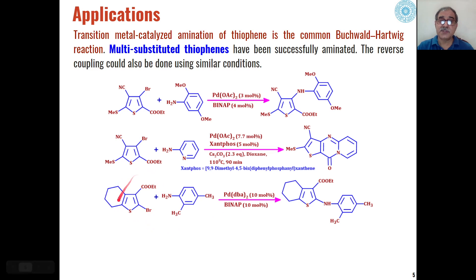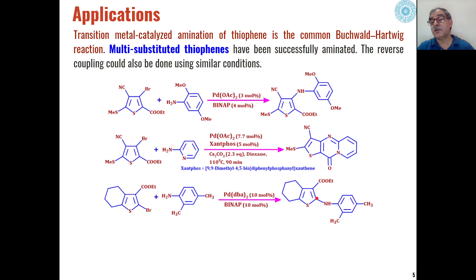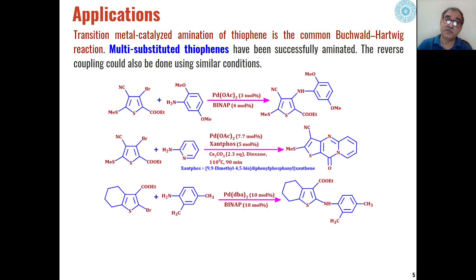These types of substituted thiophenes also react with aromatic amines in presence of palladium catalyst to give carbon-nitrogen bond formation at carbon-2, where the halide and H are eliminated to give products with a new carbon-nitrogen bond.